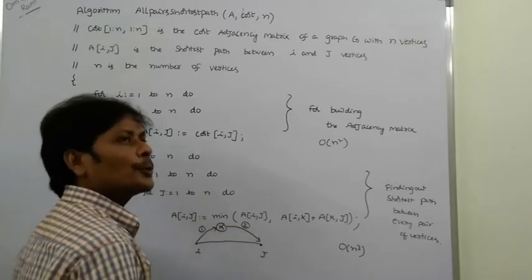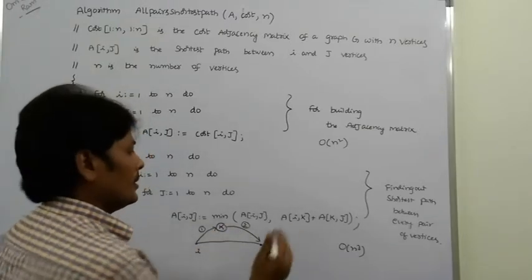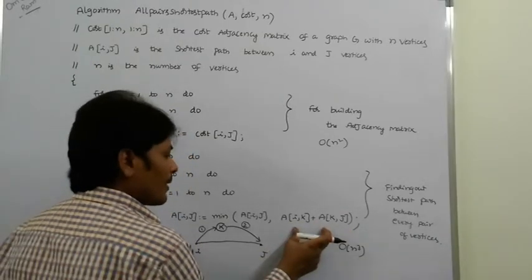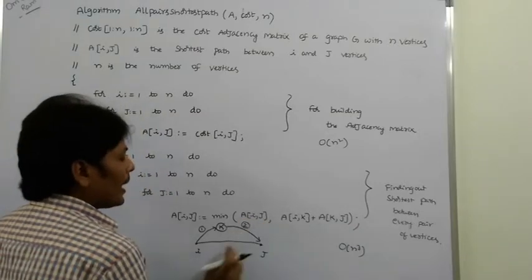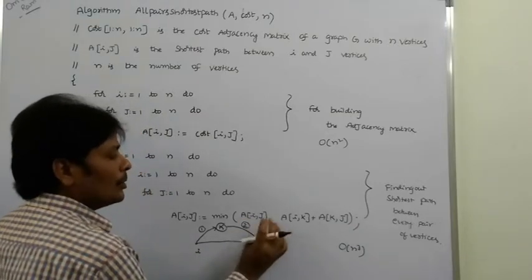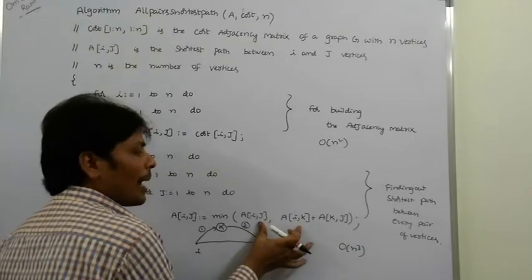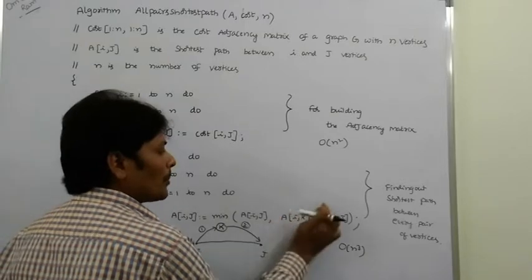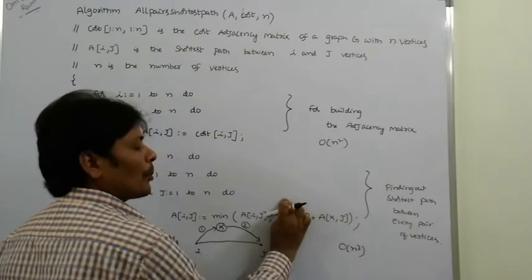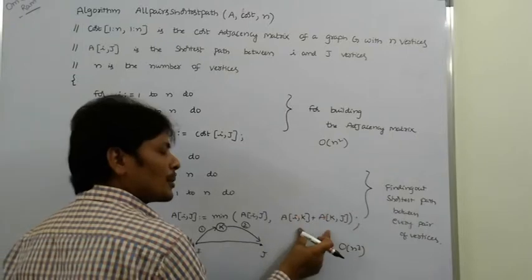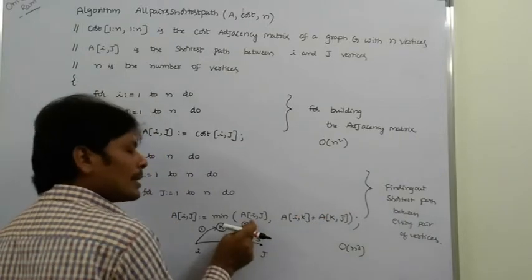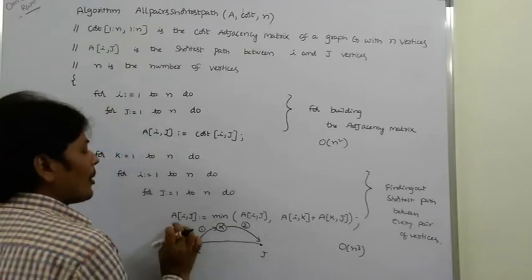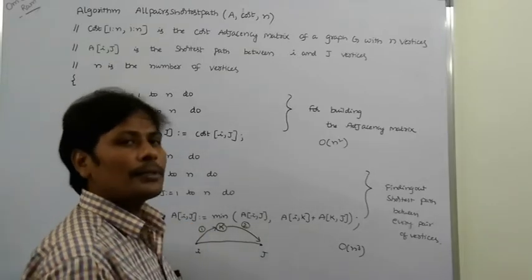The sum of the solutions of the two sub-problems is A[i, k] plus A[k, j]. A[i, j] is the value from the original problem. Among these two values — the sum of the sub-problem solutions and the original problem value — whichever is minimum is taken as the shortest distance between i and j.